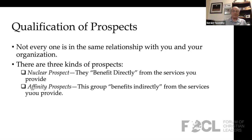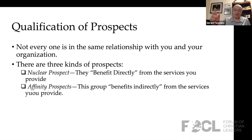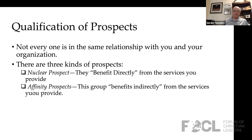There's another group of prospects we call affinity prospects. An affinity prospect represents a group of people who benefit indirectly from the services you provide. They don't experience the same thing a nuclear prospect does, but they are obviously involved to some degree with the organization. For example, cousins and neighbors and people who were aware of what we were doing — we didn't know them as well, but we knew they were interested in what we're doing. They have some sense of relationship with you.